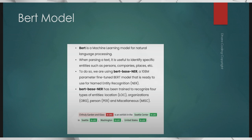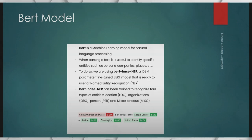It will try to identify in four categories: first is location, second is organization, third is person, and fourth is miscellaneous. If a certain name is there it will say that this is a person name. This BERT model has been trained on 108 million parameters.